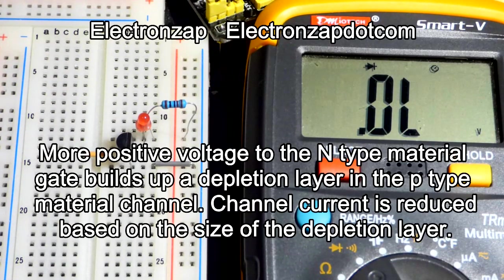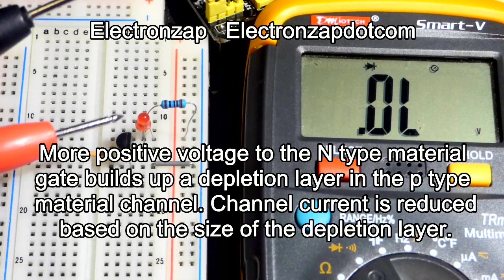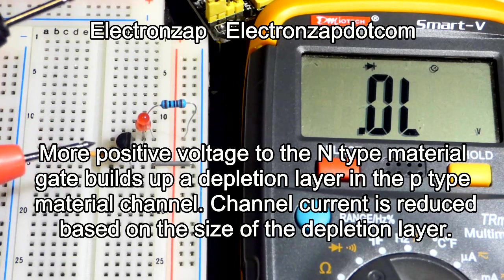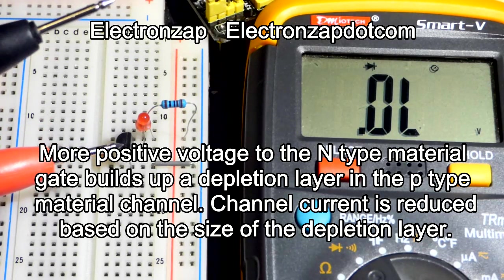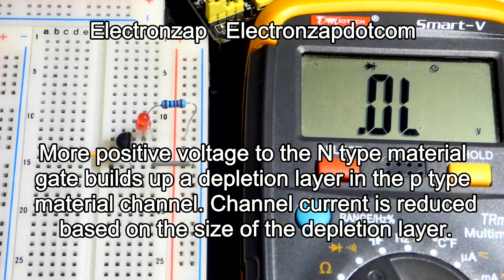So, I don't have the terminology down. But, it pinches off the P-type material conductively. It prevents it from conducting the more positive of a signal you give to the N-type material.